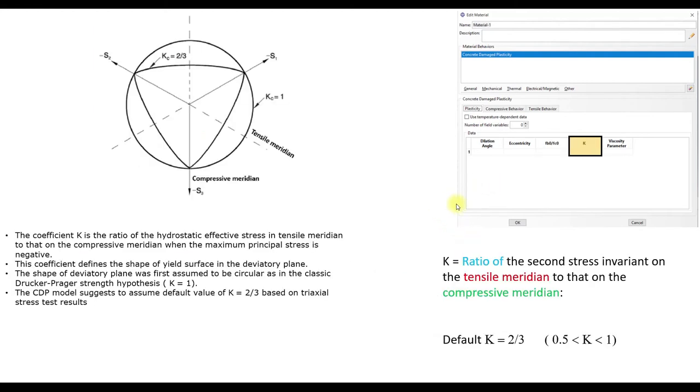Next we have the value K. And the value K is also a ratio. It's the ratio of the second stress invariant on the tensile meridian to that on the compressive meridian.